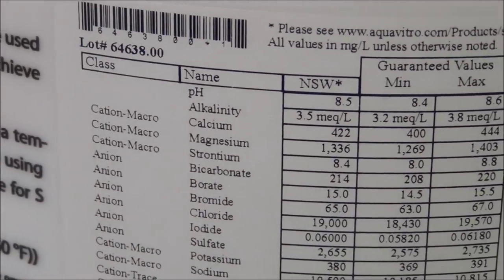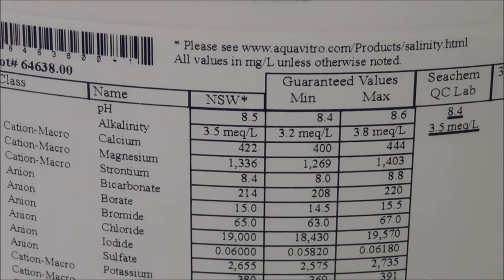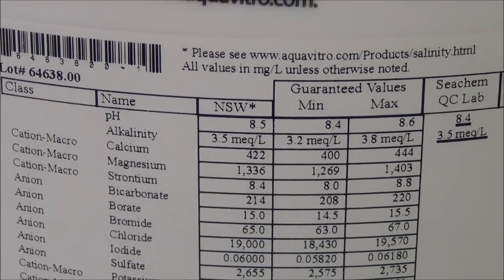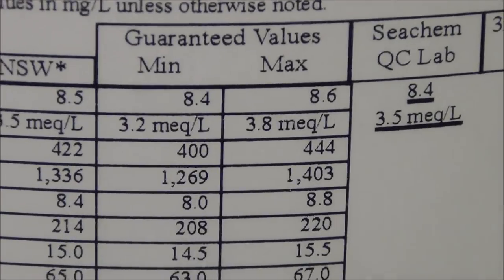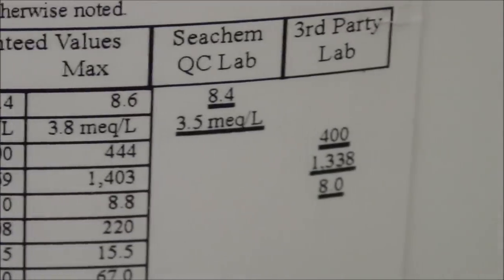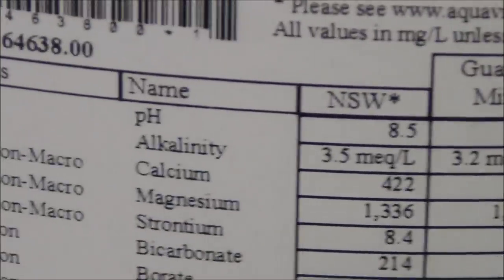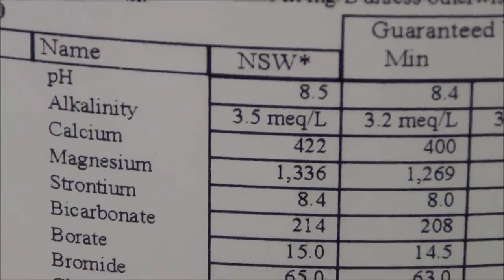And your magnesium levels, the natural sea water is 1,336. Your guaranteed minimum is there. Guaranteed max, 1,338. Natural sea water is 1,336.